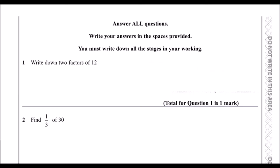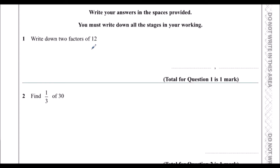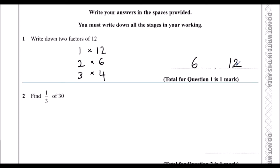Question 1 says write down two factors of 12. The factors of 12 are the numbers that we can multiply together to make 12. So we can have 1 times 12, two sixes, or three fours. The factors of 12 are 1, 2, 3, 4, 6 and 12. We only need to give two of them, so any two of these numbers will be correct.